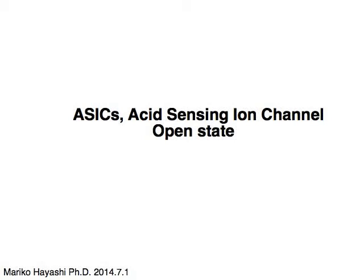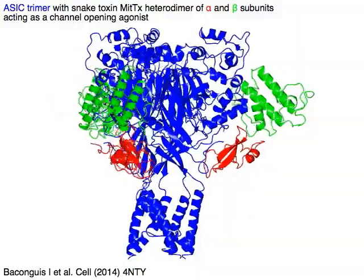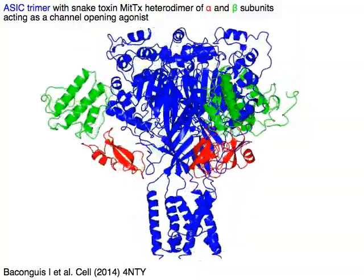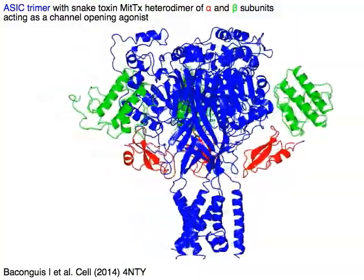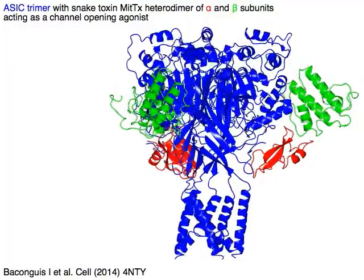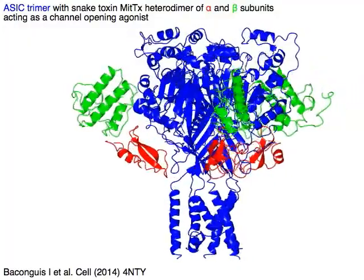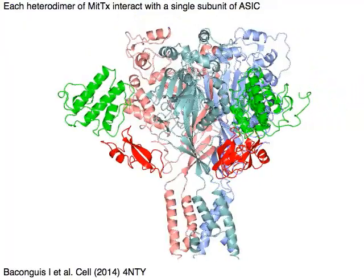ASIC's acid-sensing ion channel, open state. ASIC trimer in blue with SNATOX and MITTX heterodimer, alpha subunit in red and beta subunits in green, acting as a channel opening agonist.